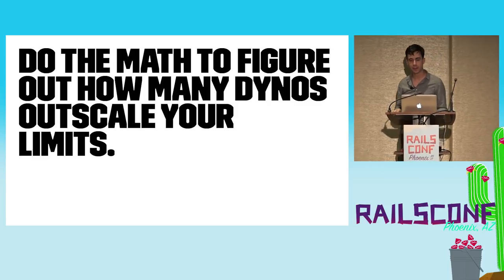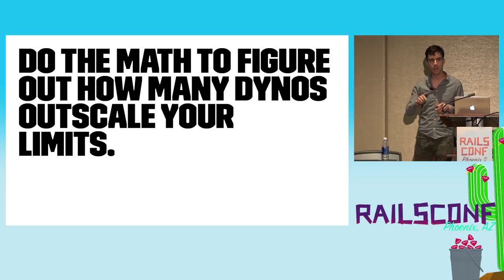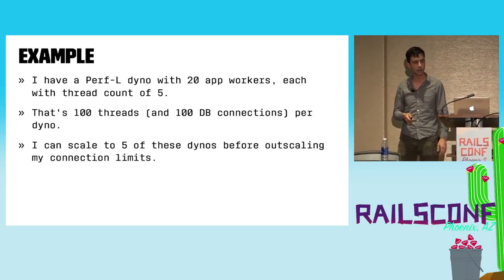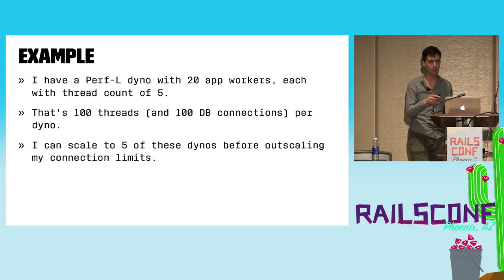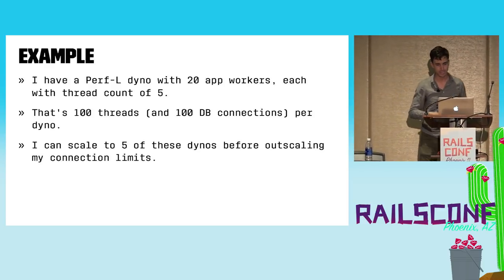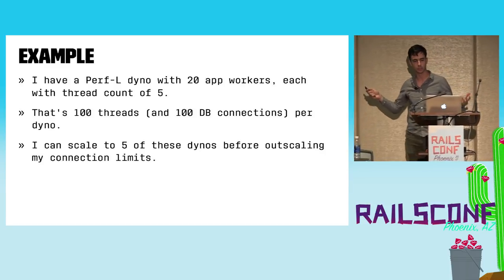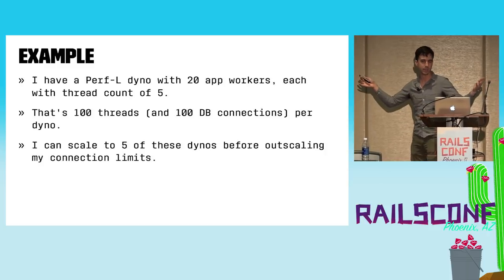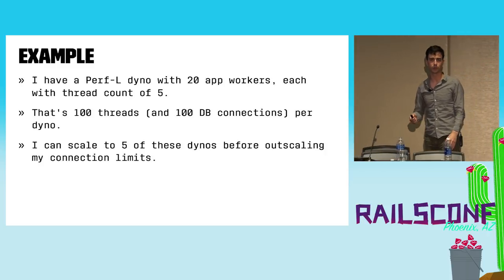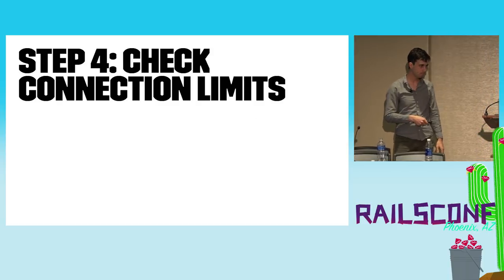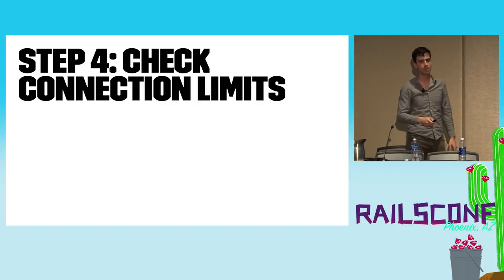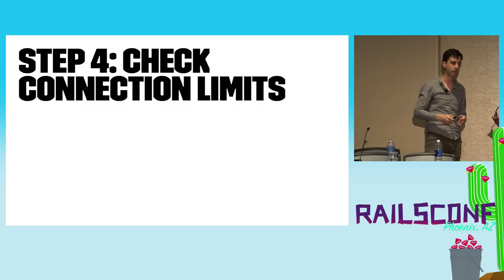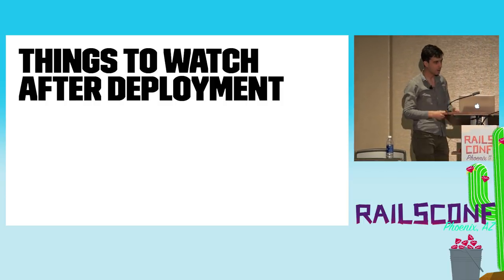Do the math to figure out how many dynos would outscale your connection limits. As an example: a PerfL dyno with 20 app workers and 5 threads each equals 100 database connections per dyno. At five dynos, that's 500 connections — hitting the Standard 4 Heroku Postgres connection limit. Now we've checked our connection limits and we're ready to deploy.